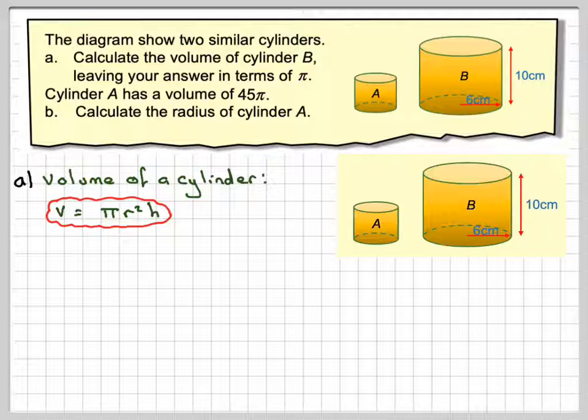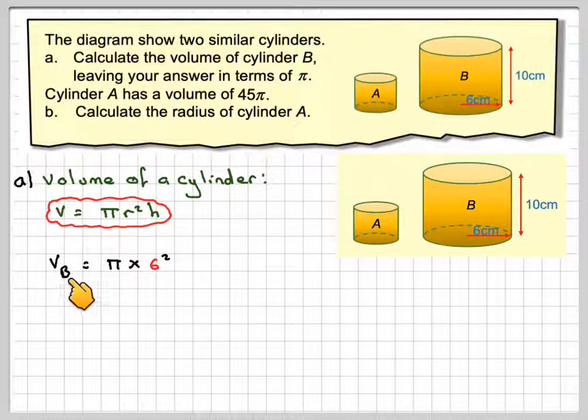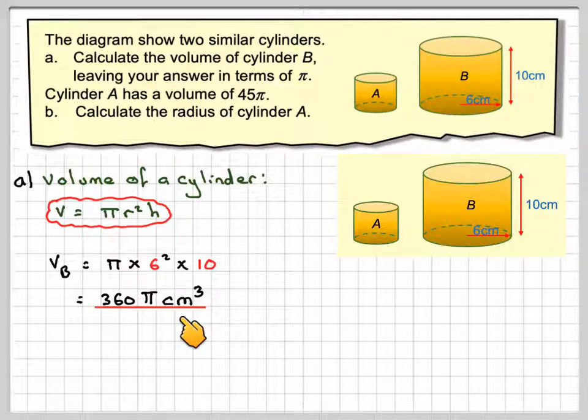So the volume of B, I'll use B subscript here, will be pi times the radius squared, so pi times 6 squared times the height, which is 10. 6 squared is 36 times 10, we'll make that 360 pi.